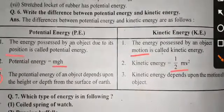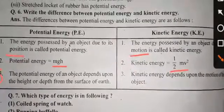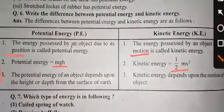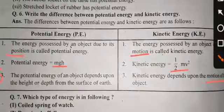Third point: the potential energy of an object depends upon the height or depth from the surface of the earth. Kinetic energy depends upon the motion of the object.